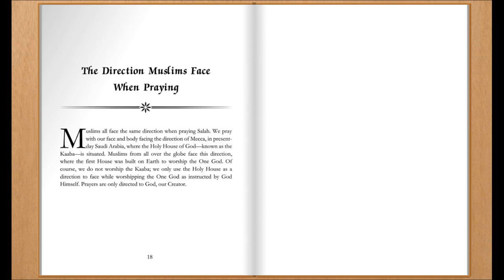The Direction Muslims Face When Praying. Muslims all face the same direction when praying Salah. We pray with our face and body facing the direction of Mecca in present-day Saudi Arabia, where the Holy House of God, known as the Kabah, is situated. Muslims from all over the globe face this direction, where the first house was built on earth to worship the one God. We do not worship the Kabah; we only use the Holy House as a direction to face while worshiping the one God as instructed by God Himself. Prayers are only directed to God, our Creator.